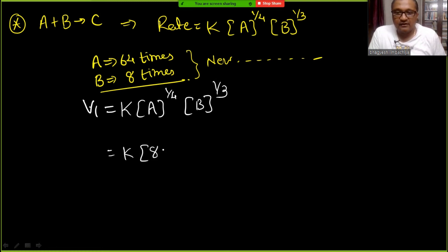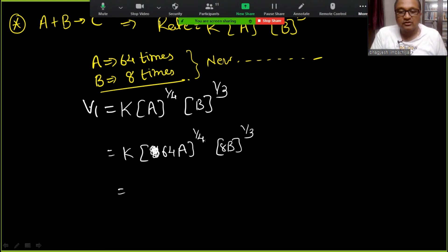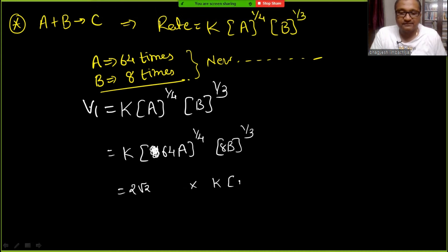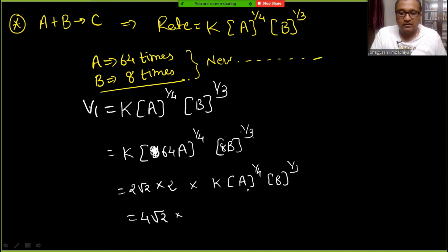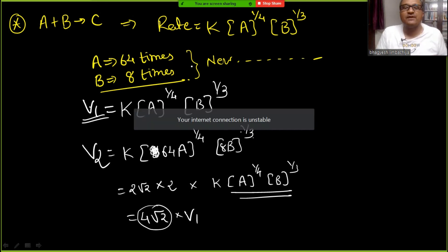V2 = K × (64A)^(1/4) × (8B)^(1/3). Now 64^(1/4) = (4th root of 64) = 2√2, and 8^(1/3) = cube root of 8 = 2. So V2 = 2√2 × 2 × K × A^(1/4) × B^(1/3) = 4√2 × V1. Answer is 4√2 times.